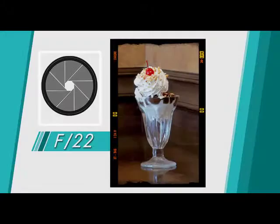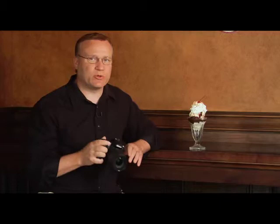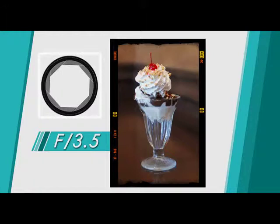First, we'll take some pictures with everything in sharp focus. To do that, we'll set the camera to aperture priority mode and choose an aperture of f22. Now let's take some pictures with only the ice cream in focus. We're still in aperture priority mode and this time we'll choose an aperture of f3.5. When we see both images side by side, it shows what a difference the depth of field can make. The photo with the shallow depth of field and the blurry background immediately draws attention to the ice cream, while the photo with everything in focus has distractions in the background and can take away from the subject.